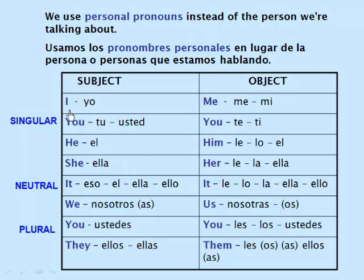Subject and object pronoun pairs: I / me. You / you. He / him. She / her. Singular, singular. It / it. Neutral, neutral.